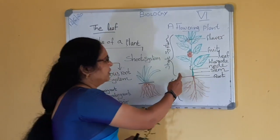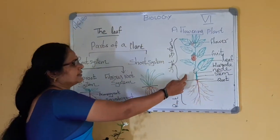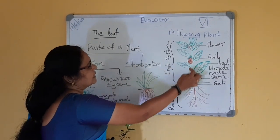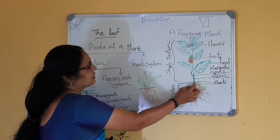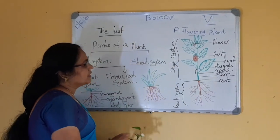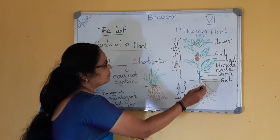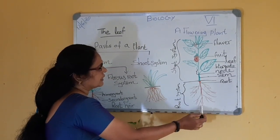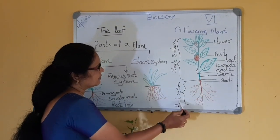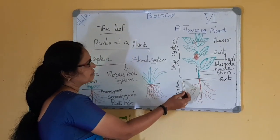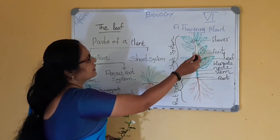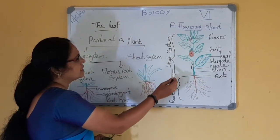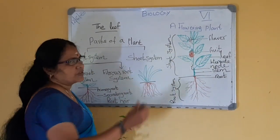Look at the board. Here, the diagram is given. Here you can see the part which grows downward under the ground — that is the root system. And the part that grows above the ground — that is the shoot system.